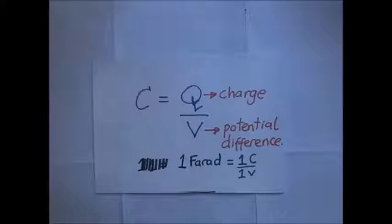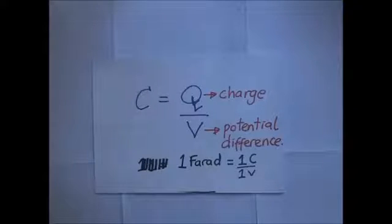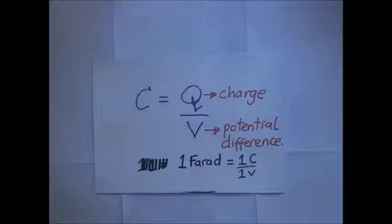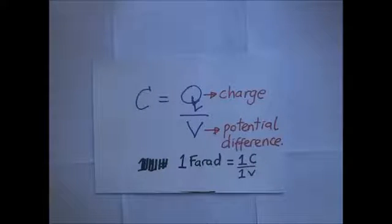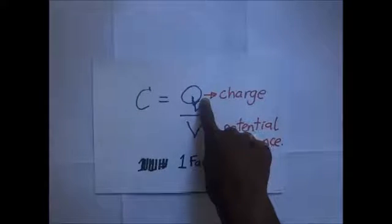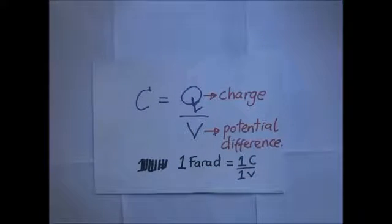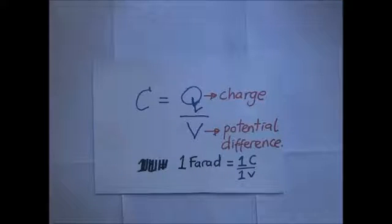The property of a capacitor to store a charge on its plates in the form of an electrostatic field is called the capacitance of a capacitor. Although we may say the energy is stored on the plates, it is more truthful to say the energy is stored within the field between the plates. By definition, capacitance is the ratio of the magnitude of the charge on either plate to the potential difference across the capacitor.